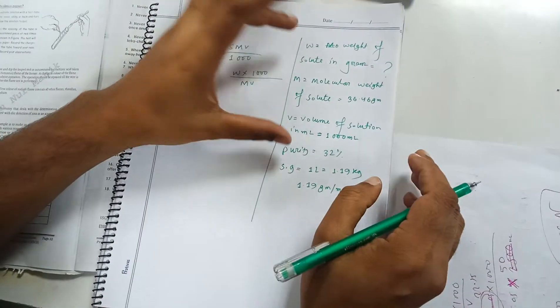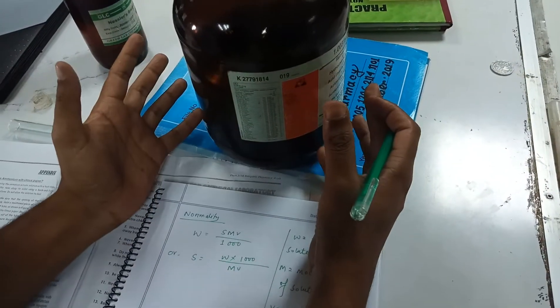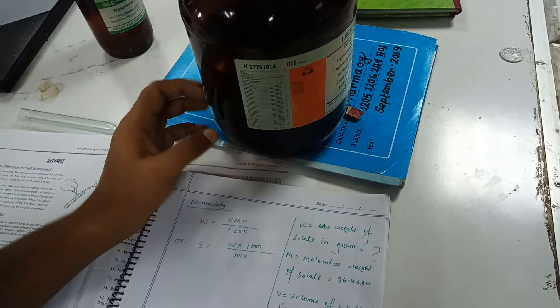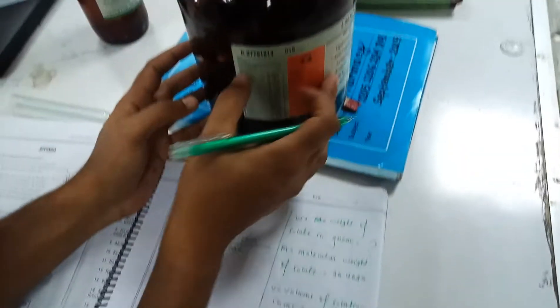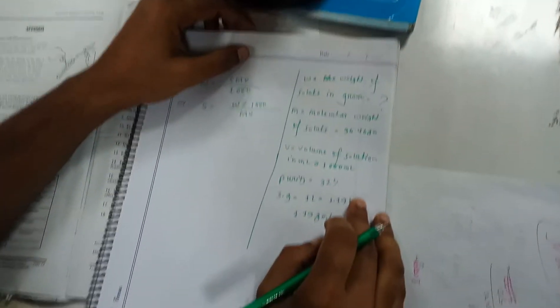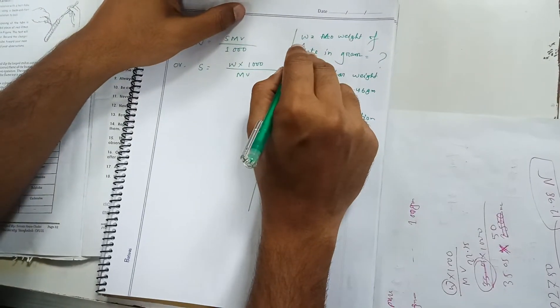That means for this container, what will be the molarity of the hydrochloric acid if we take 1000 ml of this hydrochloric acid solution? Now, we have to find out the W.